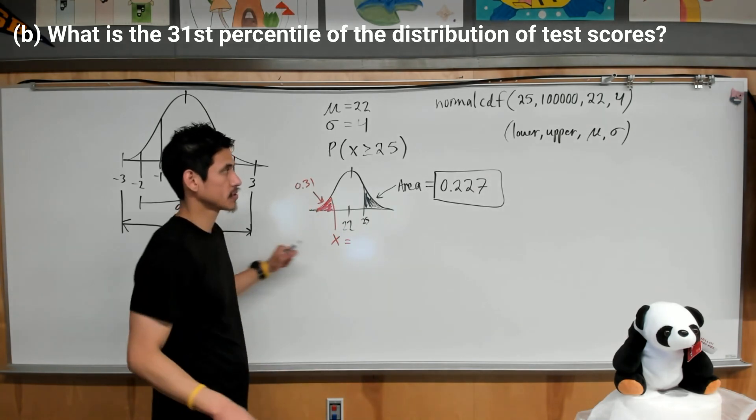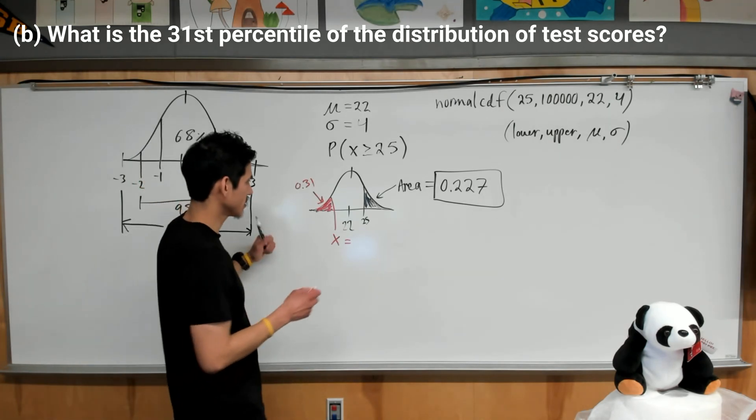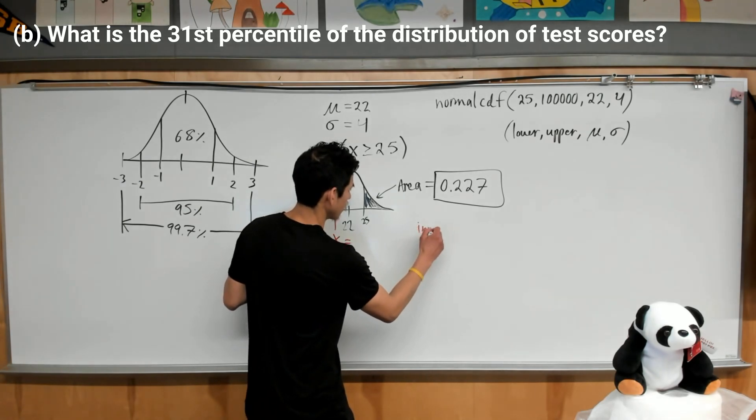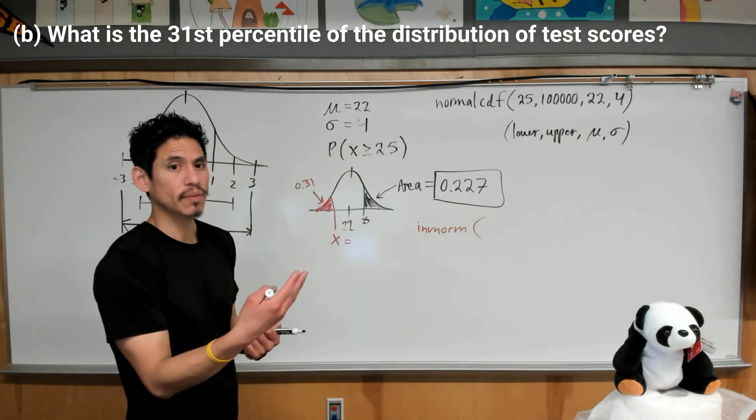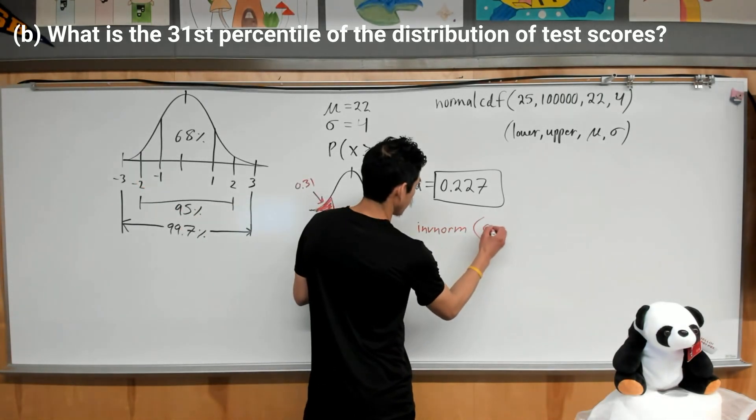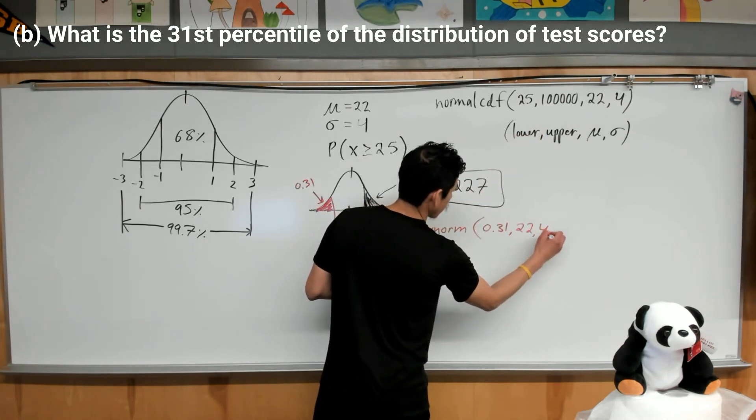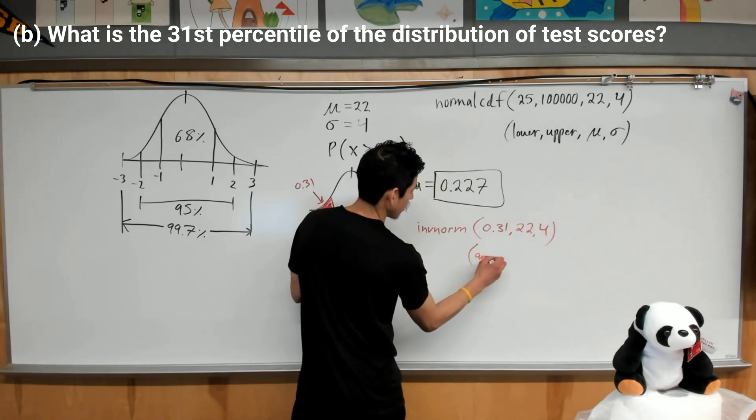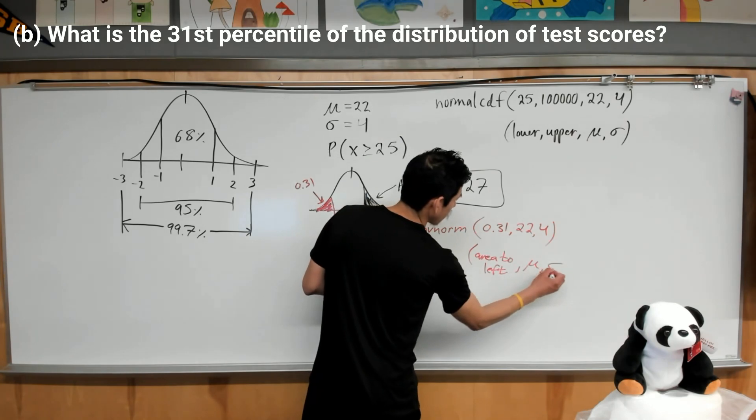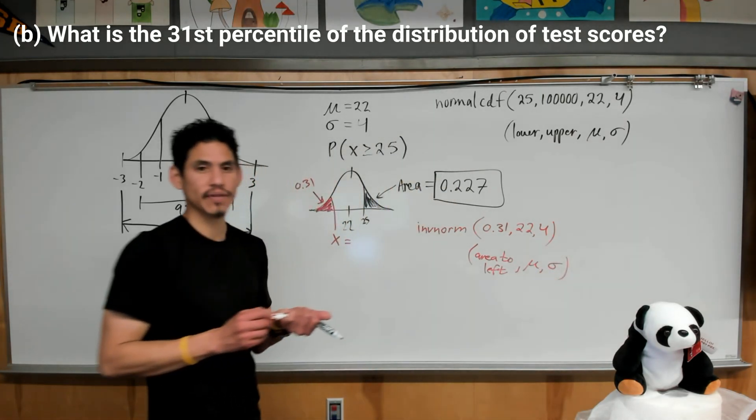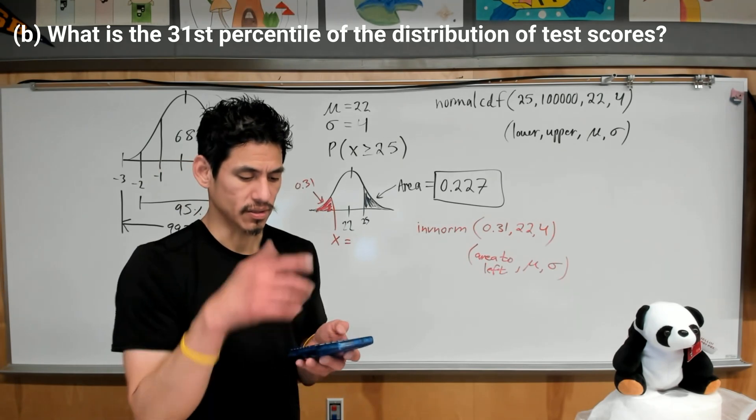So then there's two ways to go about it. You can standardize it or you can go straight to what we have with these values. Now the cool way to go about this is using what's called the inverse norm function in your calculator. Inverse norm, open the parentheses. You're going to type basically the area to the left, 0.31, followed by the mean and standard deviation. So followed by 22, 4. So area to the left, mean, standard deviation. Again, if you have the newer version calculators, it just says that in the function so it's easy to know what to type in.